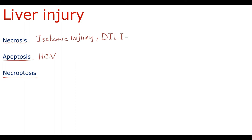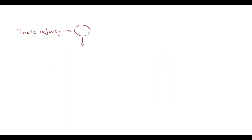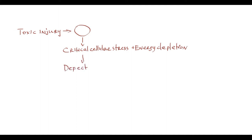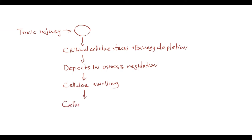Necrosis is uncontrolled death of a large group of cells, followed by acute inflammation. In toxic injury, for example, cells reach the critical point of cell loss stress and energy depletion, and at this condition, cells lose the ability to maintain basic homeostasis. This results in defects in osmosis regulation that leads to cellular swelling and eventually cellular rupture with subsequent acute inflammation.